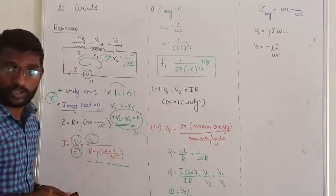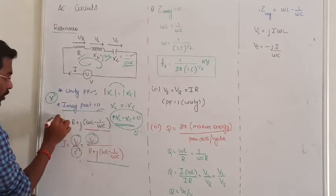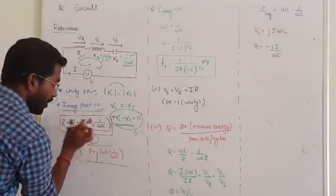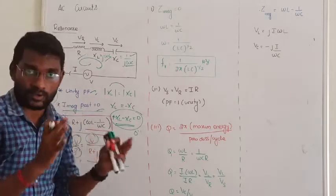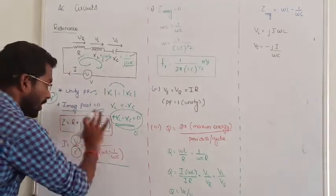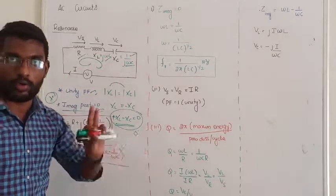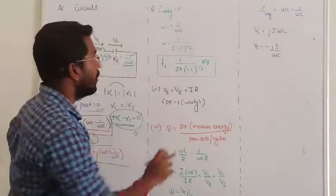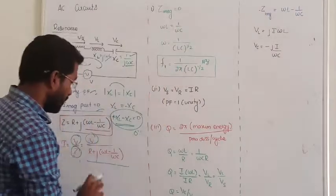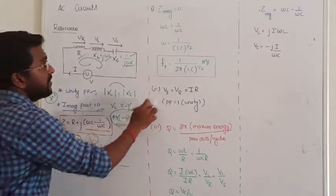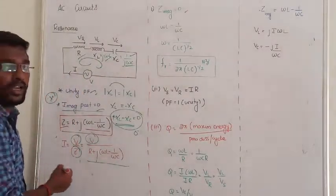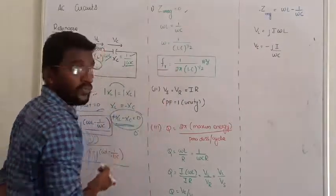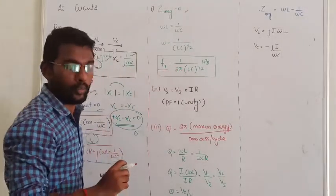The imaginary part of the total impedance is going to be zero. This is the imaginary part — very, very important. The circuit is purely resistive. Setting j times the imaginary part to zero gives: ωL = 1/ωC, that is ωL − 1/ωC = 0. Solving this, we get the resonant frequency as 1 divided by 2π times the square root of LC.